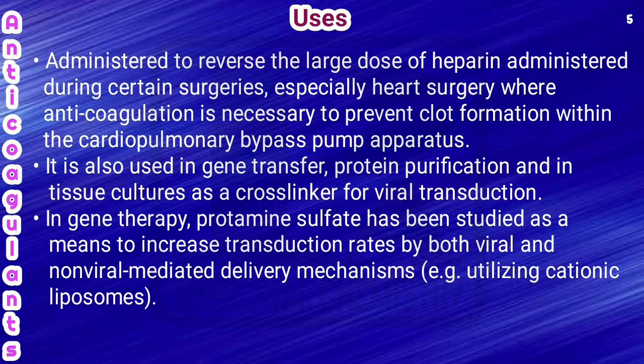The uses of protamine sulfate: it is administered to reverse large doses of heparin given during surgeries, especially heart surgery, where anticoagulation is necessary to prevent clot formation within the cardiopulmonary bypass pump apparatus. It is also used in gene transfer, protein purification, and tissue cultures as a cross-linker for viral transduction in gene therapy, to increase the transduction rate by both viral and non-viral mediated delivery mechanisms.